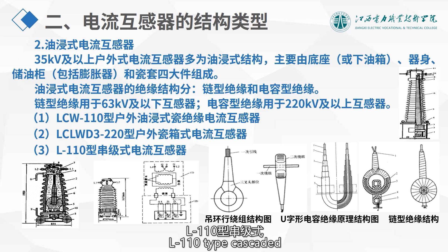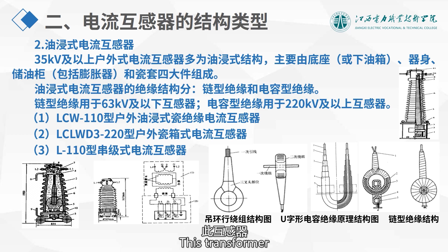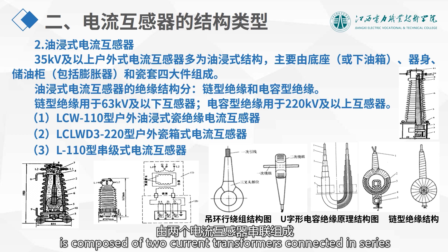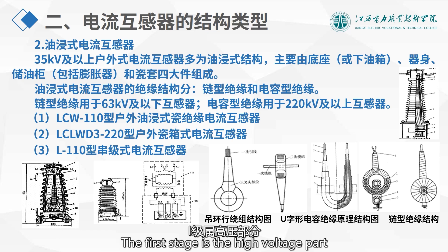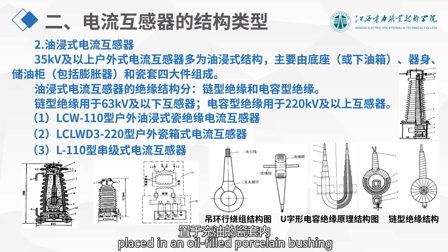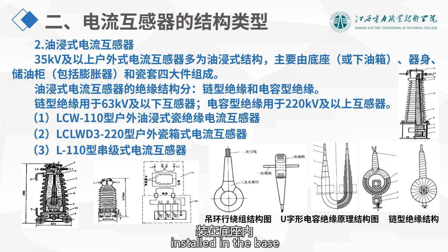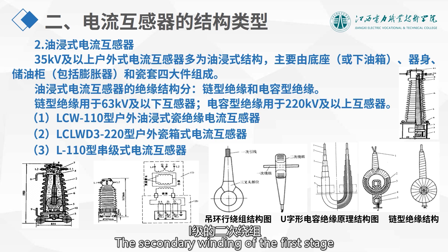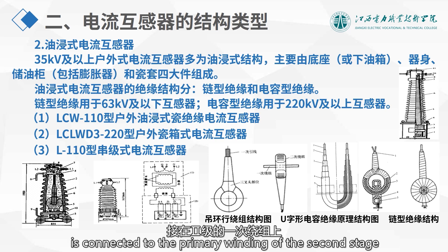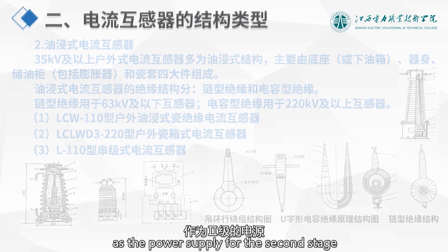The L110 type cascaded current transformer is composed of two current transformers connected in series. The first stage is the high voltage part placed in an oil-filled porcelain bushing. The second stage is the low voltage part installed in the base. The secondary winding of the first stage is connected to the primary winding of the second stage as the power supply for the second stage.